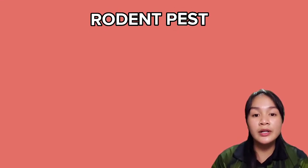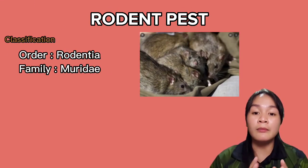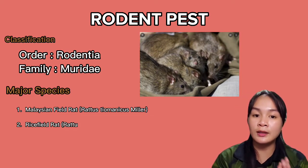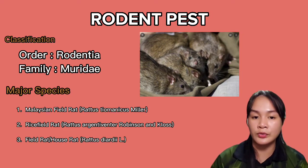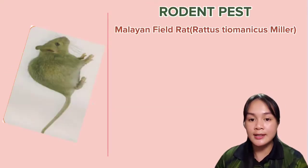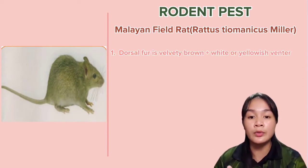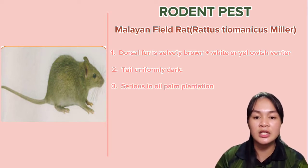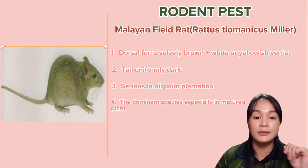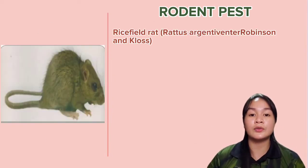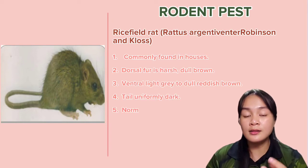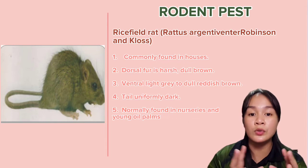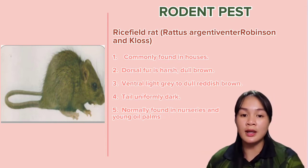The last major pest in oil palm plantation is the rodent pest, under the order Rodentia and family Muridae. The major species in Malaysia's oil palm plantation are the Malayan field rat, rice field rat, and house rat. The Malayan field rat has vividly brown and white or yellowish-white fur, with a uniformly dark tail. It is a serious pest in oil palm plantation and the dominant species especially in mature palms. The rice field rat is commonly found with harsh dark brown dorsal fur, light gray ventral, and a uniformly dark tail, and is normally found in nurseries and young oil palm.